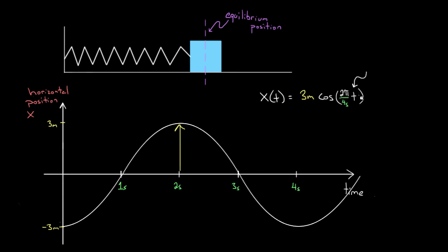This is the variable that sits there and waits for me to plug in whatever I want. But I'm not done—this would be a graph that starts up here and goes down. This graph starts down here, but that's easy: just multiply by a negative sign out front, and you've turned your cosine into negative cosine.